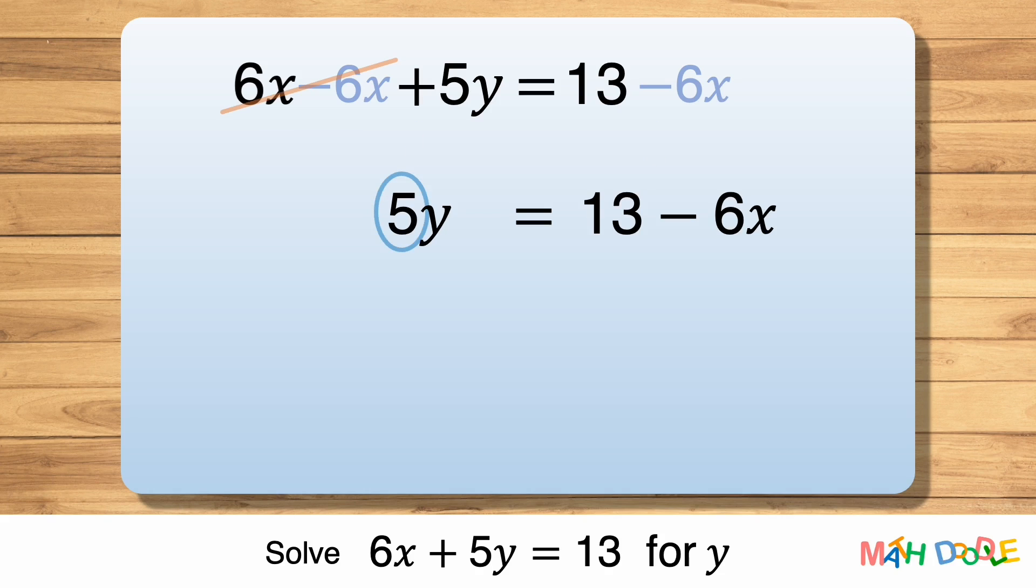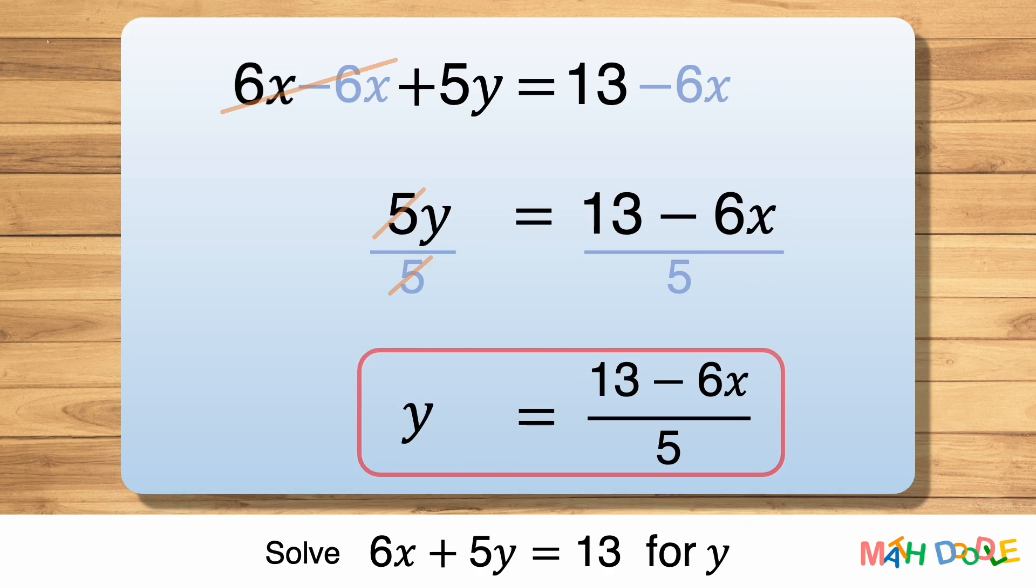Now to get rid of 5 in front of y, let's divide both sides of the equation by 5. After dividing them by 5 we have only y on the left side of the equation, and the right side of the equation becomes 13 minus 6x over 5. So the answer to this problem is y equals 13 minus 6x over 5.